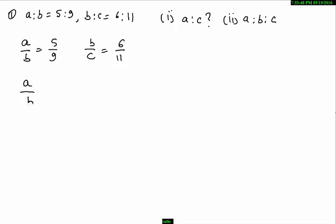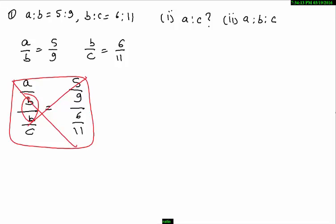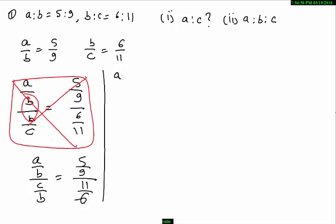To solve this, A by B multiplied by B by C equals 5 by 9 multiplied by 6 by 11. However, in this approach we would not be able to eliminate B because it comes in the lower portion. So we need to rearrange — writing A by B multiplied by C by B instead, equal to 5 by 9 upon 11 by 6. This way B gets eliminated, giving A by C equal to 5 by 9 into 6 by 11.